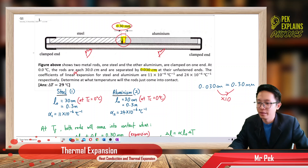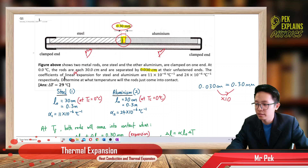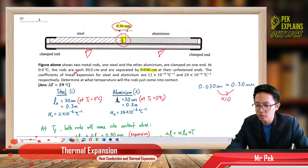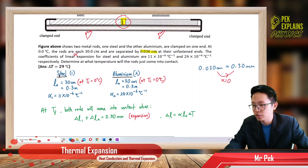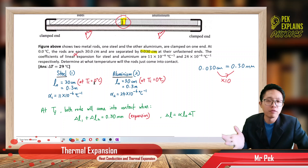At zero degrees Celsius that is the initial temperature, and 30 cm is the initial length — both rods have the same initial length. I have separated the information into two columns: one for steel and another for aluminium. I find it very systematic to separate data by column according to the type of object.